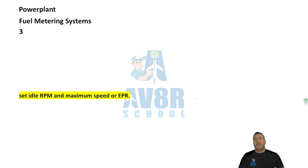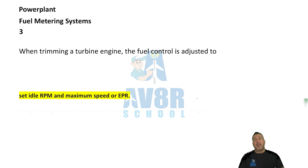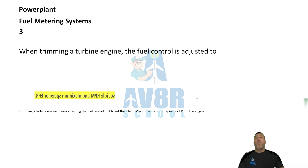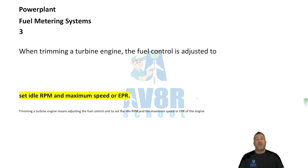Number three: set aside RPM and maximum speed EPR. When trimming a turbine engine, the fuel control is adjusted to set aside RPM and maximum speed EPR.